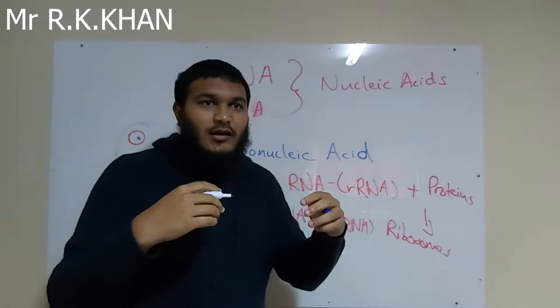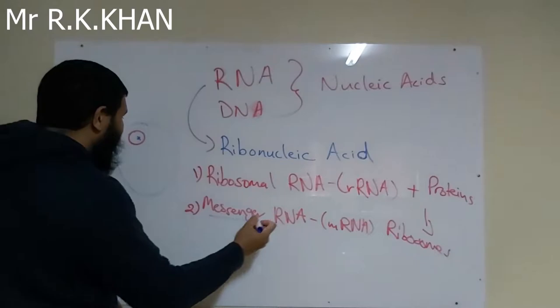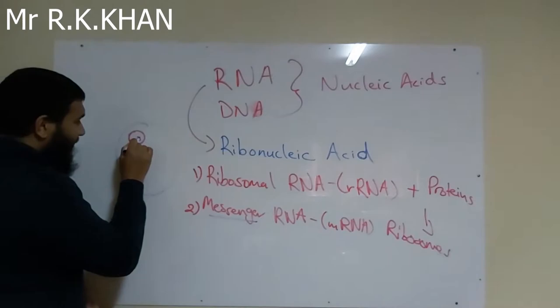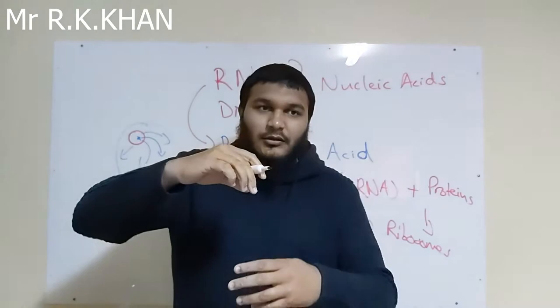DNA or genetic material controls the activity of the cell and the manufacturing of new organelles. These messages are sent by the mRNA. The DNA sends a message onto the mRNA, the mRNA moves out into the cytoplasm, and sends messages throughout the cell so the cell can function efficiently.